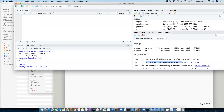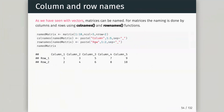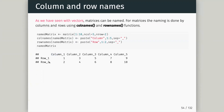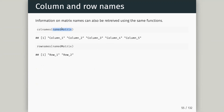The paste function concatenates strings together. I set the separator to be underscore and it's going to connect 'column' to a vector of one to five separated by underscore, giving us column names column_1 to column_5. Similarly I set row names with just two of them. Now we have a named matrix. I can use colnames to get the names from the top and rownames to get the names from the rows.